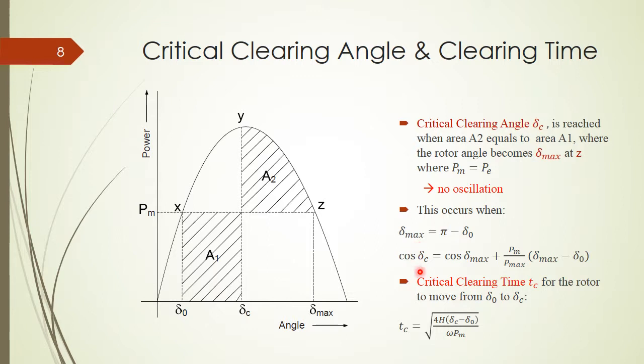Next, the critical clearing time T_c is the time needed for the rotor to move from delta_0 to delta_c. We need to know this one because we need to operate the switch to restore the system right at delta_c. So this T_c will be the square root of 4H times (delta_c minus delta_0) over omega times P_m.